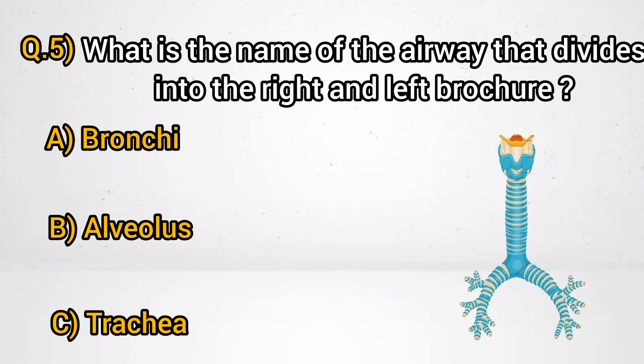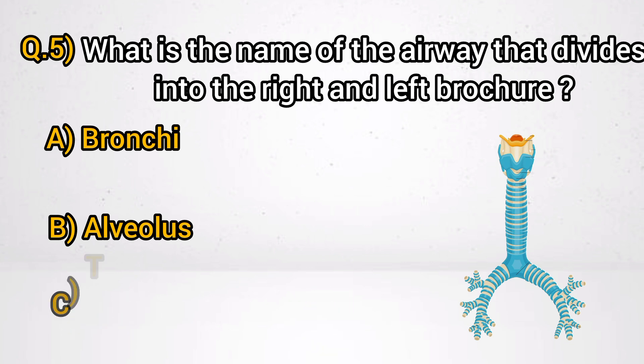Question 5: What is the name of the airway that divides into the right and left bronchi? Answer C: Trachea.